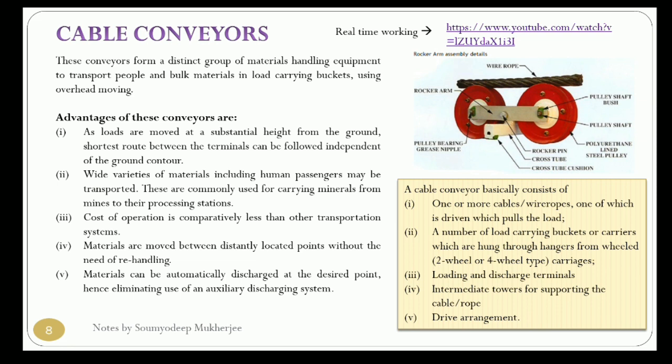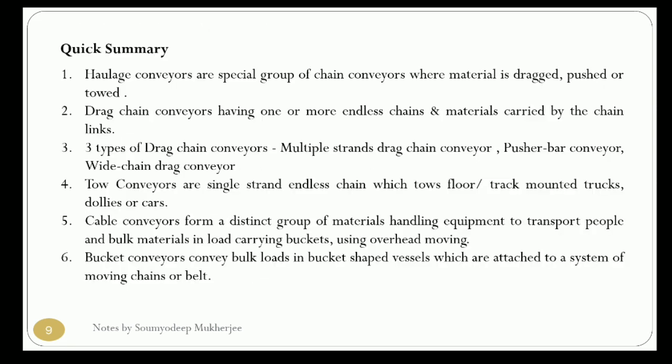The cable conveyor drive consists of a suitable power unit coupled to a speed reduction gearbox and a driving sheave. The diameter of the driving sheave depends on the rope size and rope pressure. The bucket conveyor, mentioned earlier in the context of flight conveyor, is classified as gravity discharge bucket conveyor, pivoted bucket conveyor, and bucket elevator.